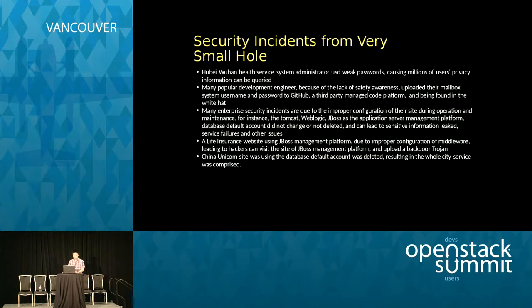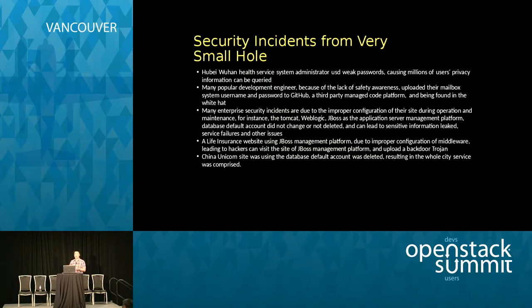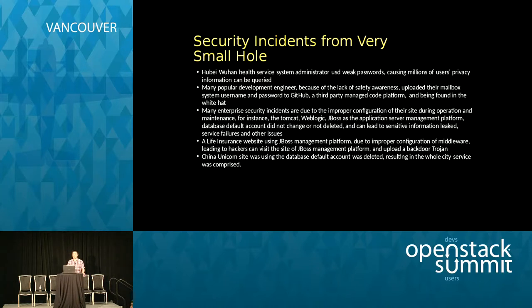Here are some security accidents from China, available from public media. Hubei Wuhan Health Center: the system admin used weak passwords, causing millions of users' private information to be leaked. Some developers upload their passwords and configuration to GitHub, leaking credentials. Many companies use a small, short password for everything, so the cloud is open to everyone. The main point is: there are many trivial security risks everywhere, and humans make mistakes. The antidote is automation — we should minimize human interaction and operation.